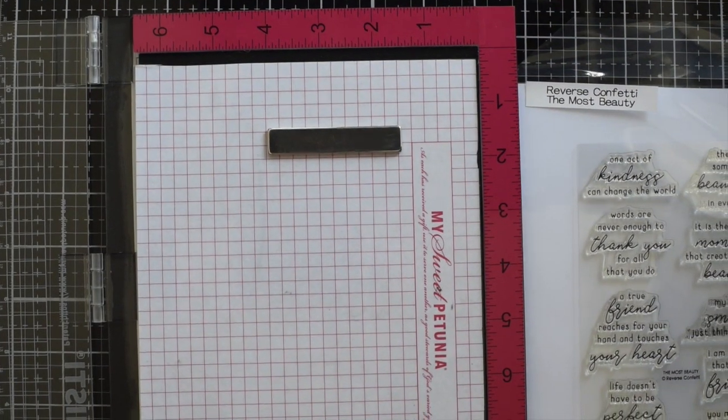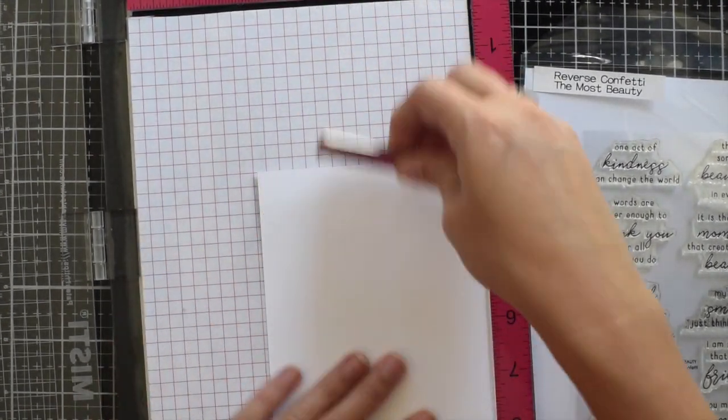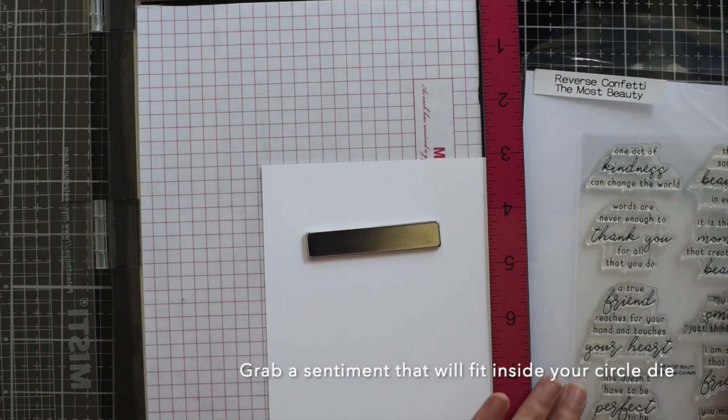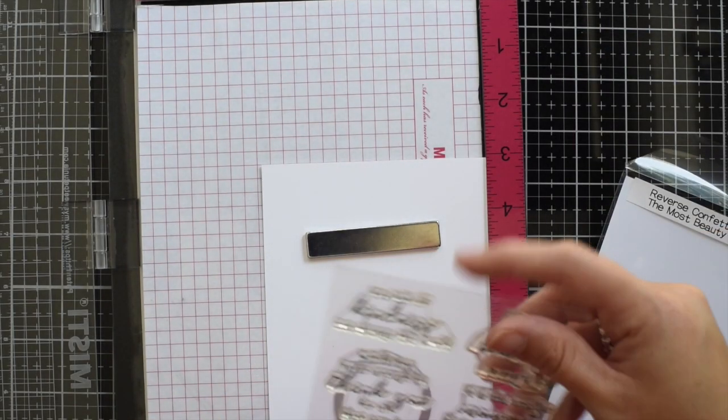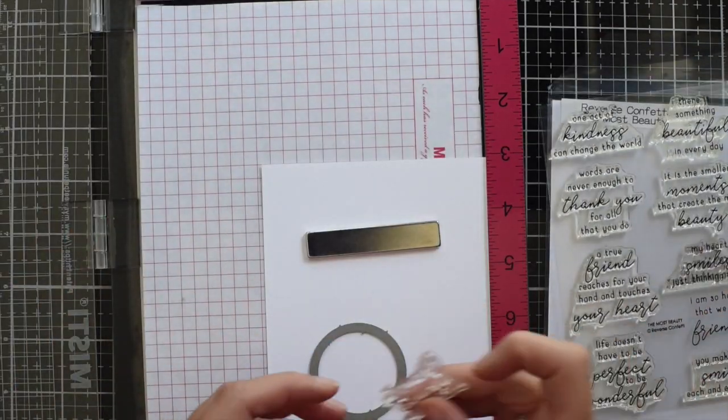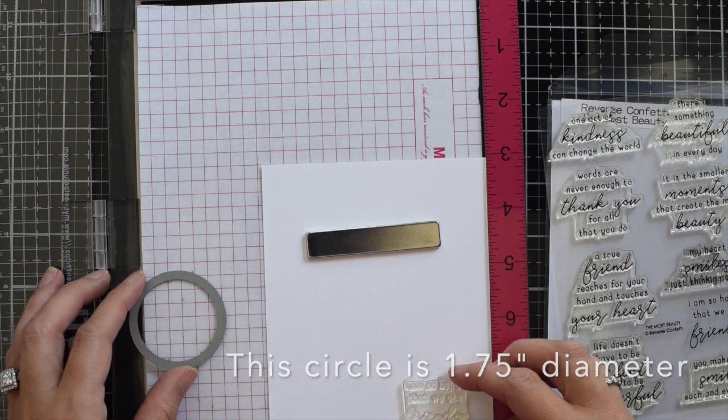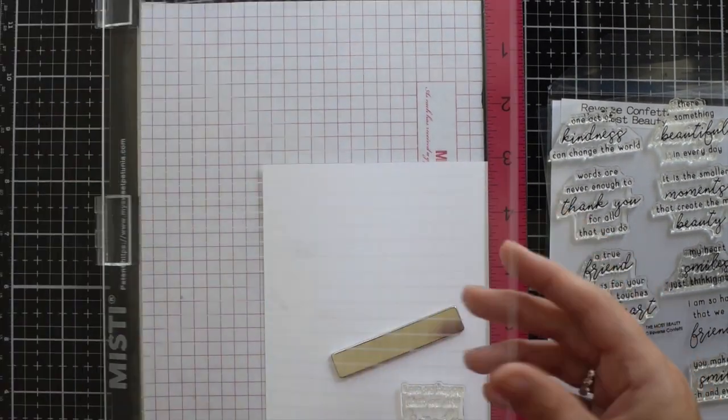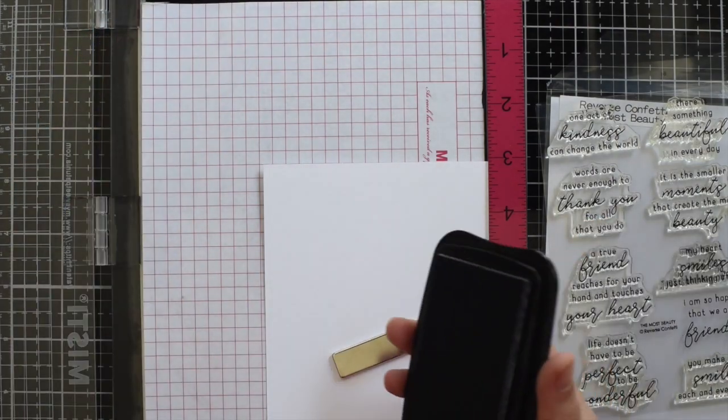Now I'm going to go ahead and stamp my sentiment. You could use any sentiment you have that would fit into the circle, and I'm just verifying that the sentiment that I choose is going to fit inside my circle die and make sure that where I stamp it I have enough room to cut the circle. I'm going to use Memento Tuxedo black ink.